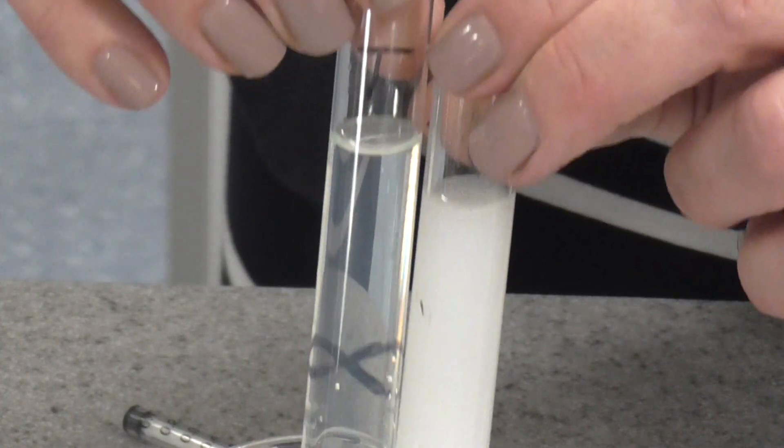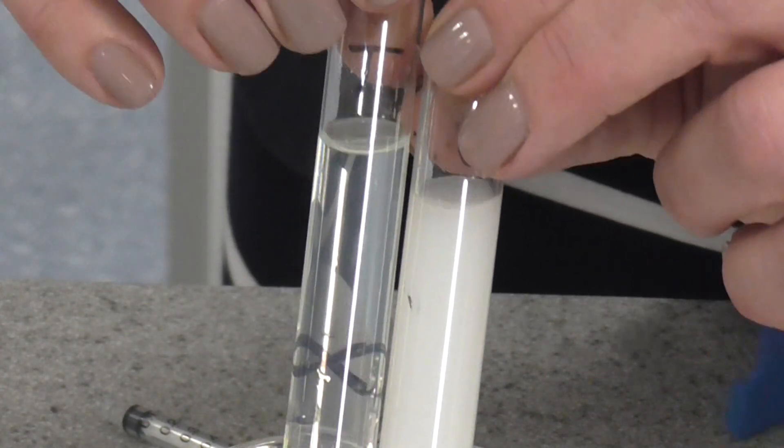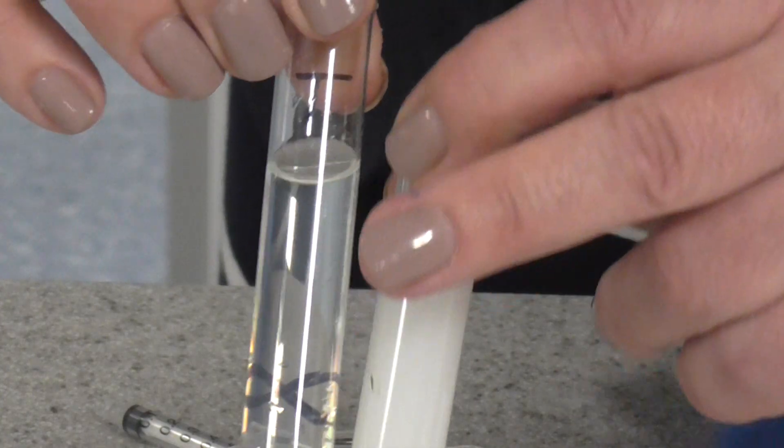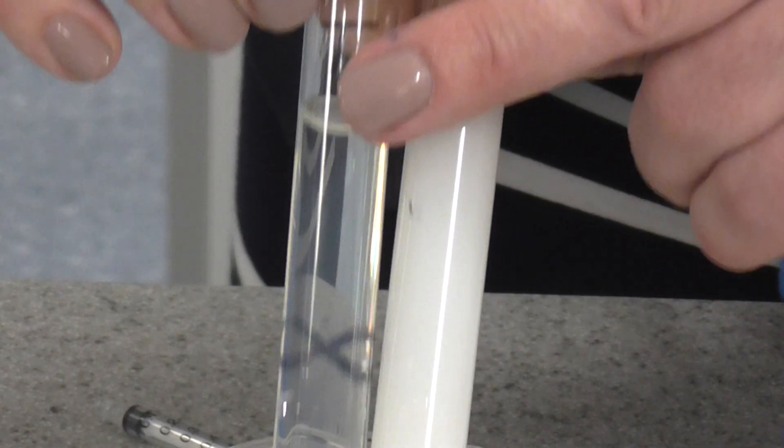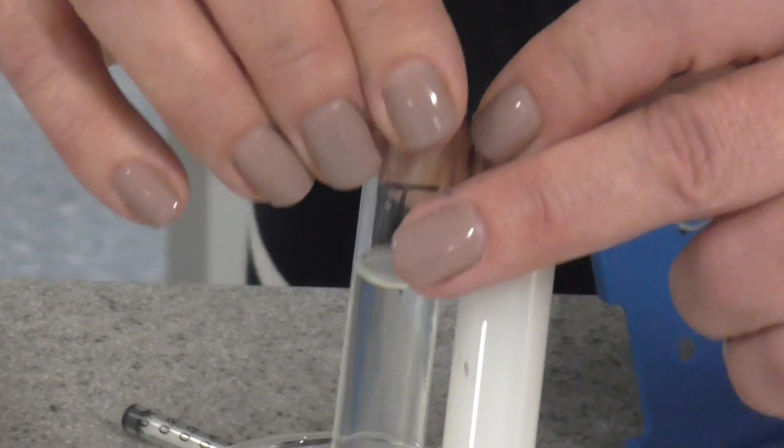So what you're timing here, the end point of this reaction, will be the point at which you can actually see the X. So you need to watch them very carefully, and as soon as the X becomes visible, you stop your timer, and that is the time that you record.